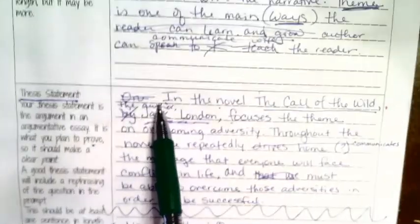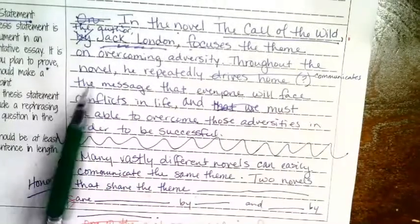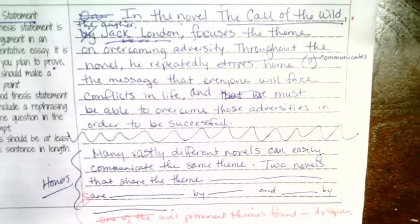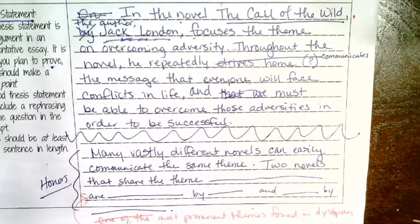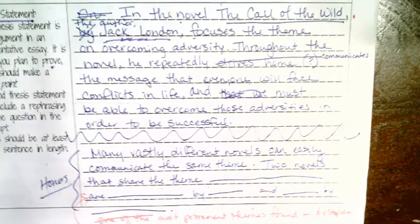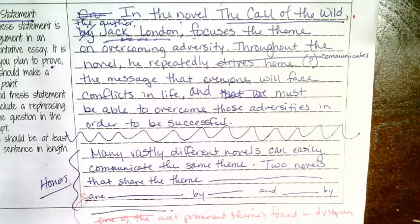After ending with talking about theme in general, I transitioned to my thesis statement: 'In the novel The Call of the Wild, the author Jack London focuses the theme on overcoming adversity. Throughout the novel, he repeatedly communicates the message that everyone will face conflicts in life and must be able to overcome those adversities in order to be successful.'